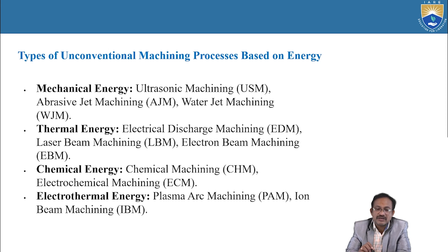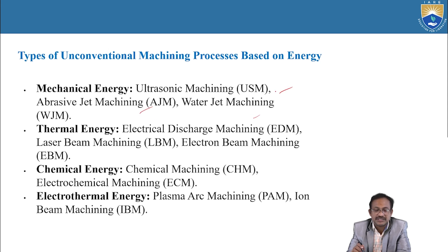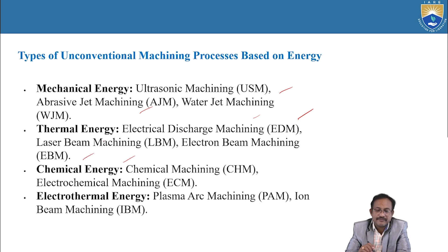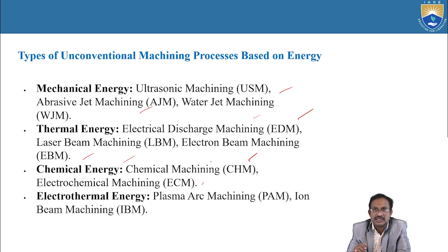Types of unconventional machining process based on energy. Based on mechanical energy: ultrasonic machining, abrasive machining, water jet machining. Based on thermal energy: EDM (electrical discharge machining), LBM (laser beam machining), EBM (electron beam machining). Based on chemical energy: chemical machining, ECM (electrochemical machining).